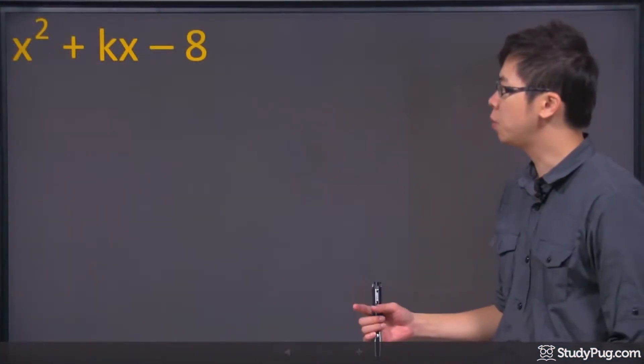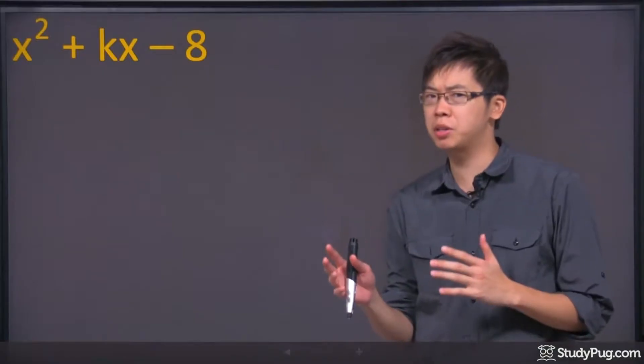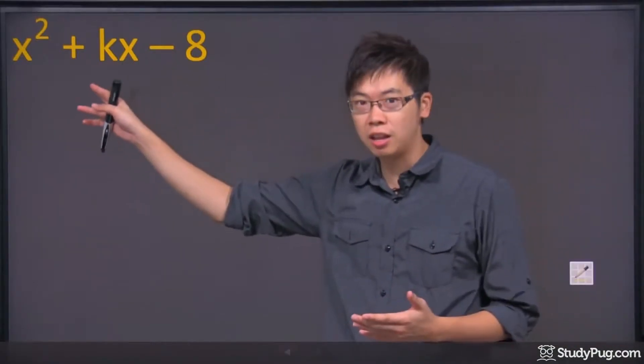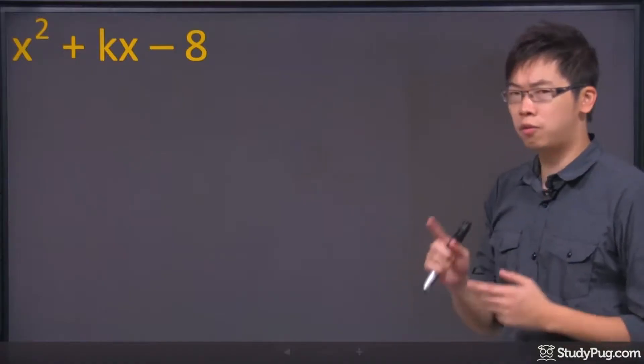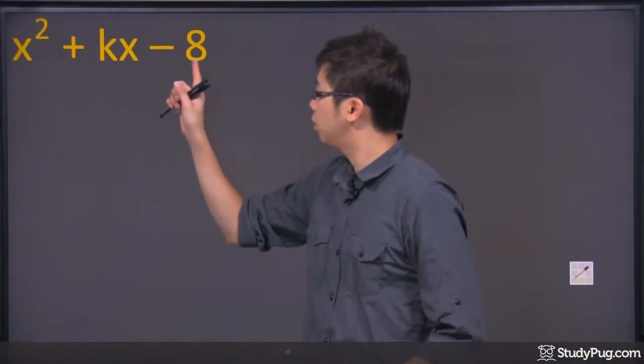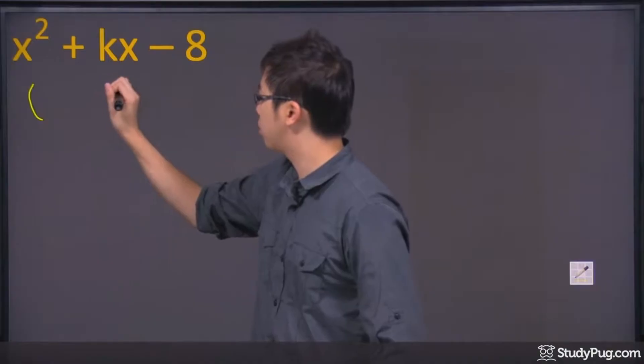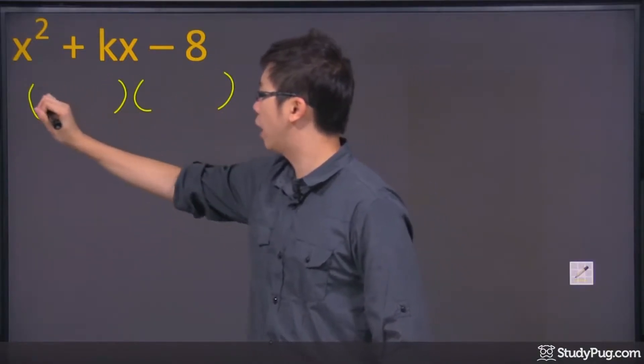Hi, welcome to this question. We're trying to figure out the possible k that can go in here. We're doing trinomial factoring. If you remember, in order to figure this out, there's a bracket bracket to start off and you put an x here.